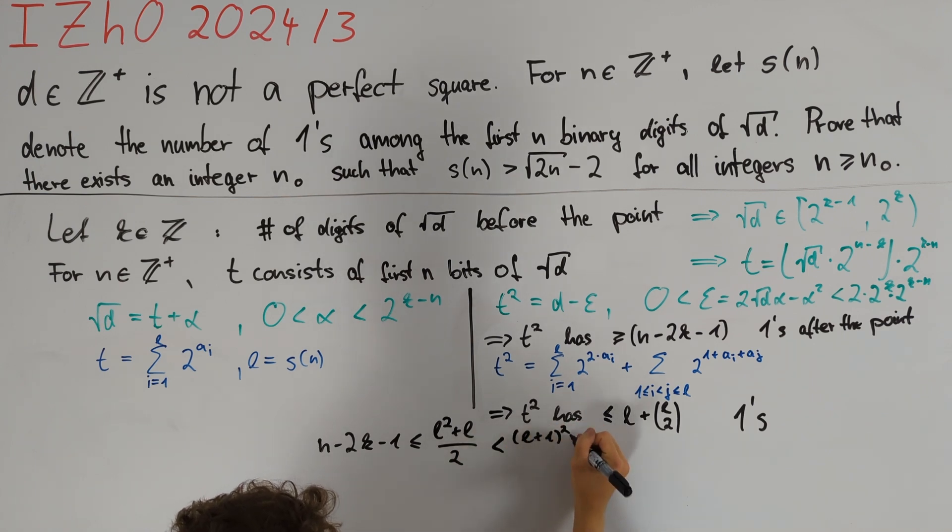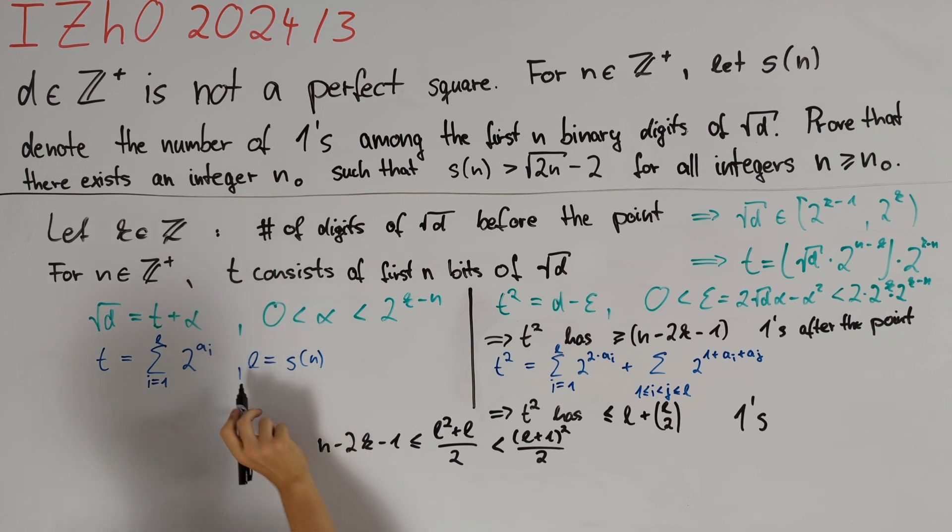Now we recall that we simply defined l as s(n), and therefore rearranging gives us that s(n) plus 1 is equal to l plus 1, which is greater than 2 times n minus 4k minus 2 and then the square root of all of this.